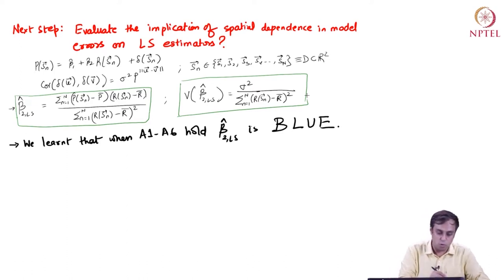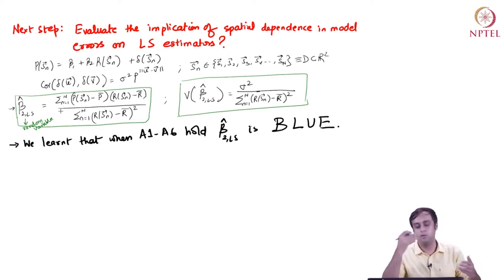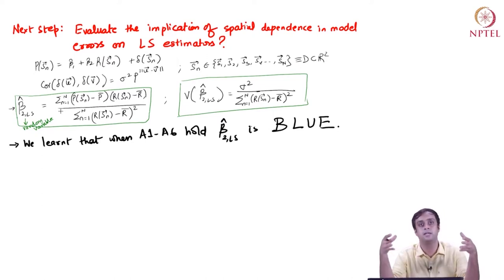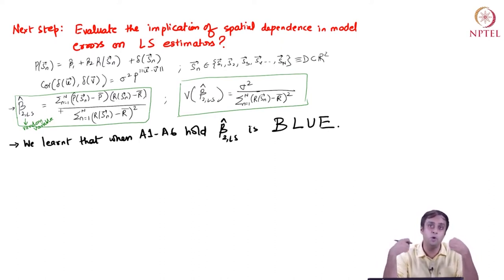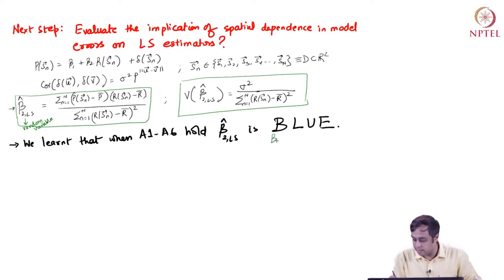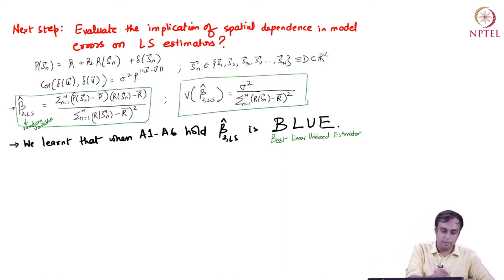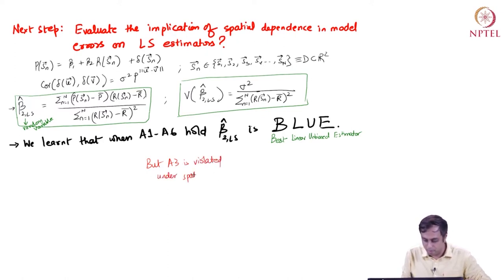We also figured that beta-hat_2_LS is itself a random variable, so what we also have to report is its precision metric, which is the variance of beta-hat_2_LS. We know from lecture 16 that under the classical assumptions, a least squares estimator is BLUE — the best linear unbiased estimator. These are the properties of beta-hat_2_LS under assumptions A1 to A6, but we know that A3 is violated under spatial dependence of model errors.